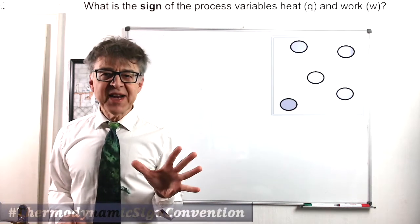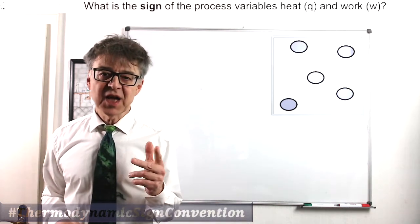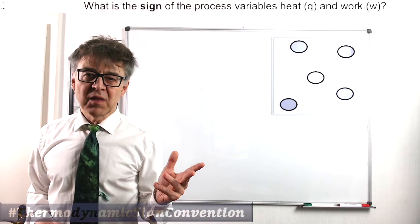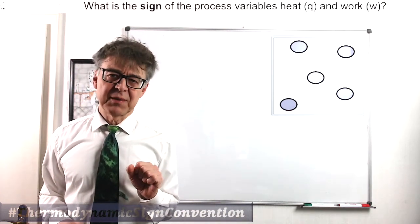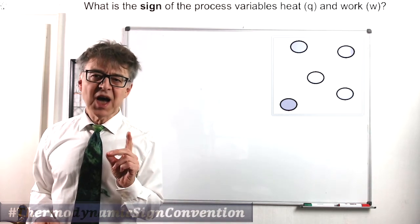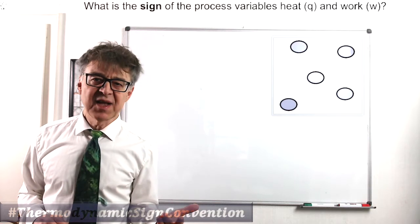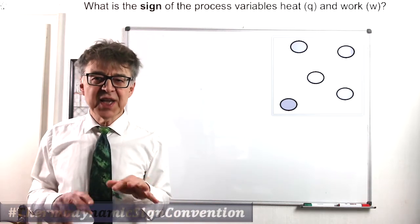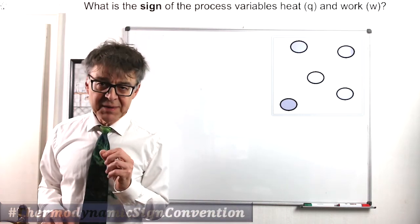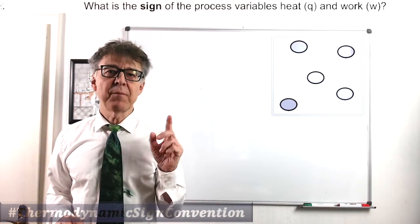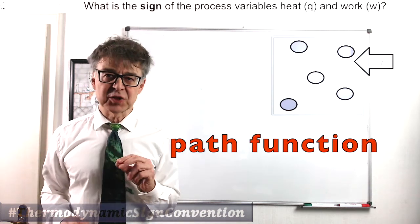From everyday life, we are familiar with two other energy quantities, heat and work. These are to be understood a little differently by thermodynamics. Heat and work are no properties of the system, no state variables. They are two types of energy exchange between system and surroundings. In thermodynamics, heat and work are called path functions and there is a strict sign convention for them.